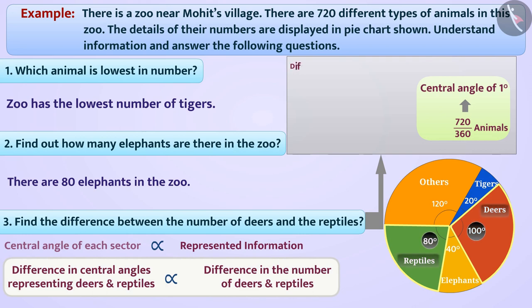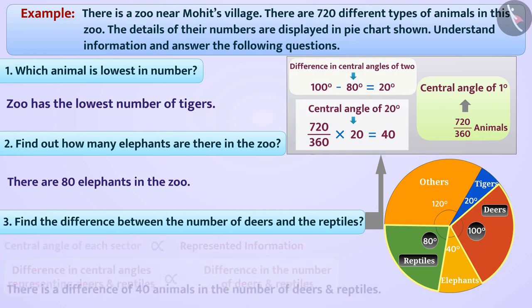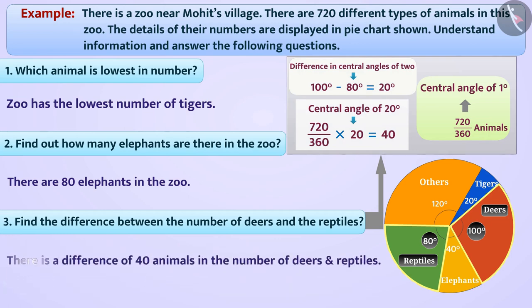Hence, the difference in the central angles of the two is 100 degrees minus 80 degrees equals 20 degrees. Since 720 divided by 360 animals can be represented by a central angle of 1 degree, hence 720 divided by 360 multiplied by 20 equals 40 animals can be represented by a central angle of 20 degrees. In this way we can say that there is a difference of 40 animals in the number of deers and reptiles.